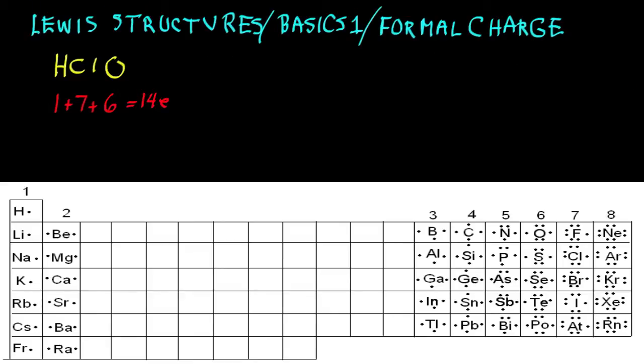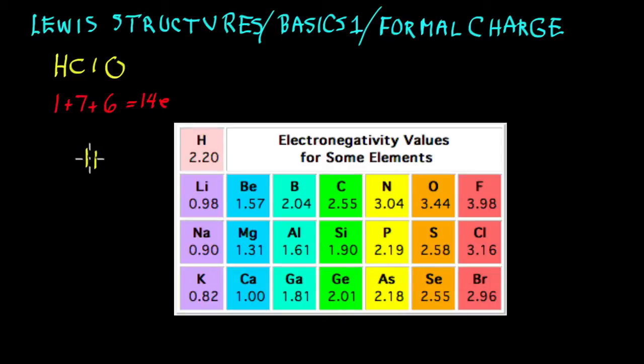The next rule is to assign the least electronegative element as the central atom. Right away we're going to have a problem here. The electronegativities: hydrogen would be least electronegative, then you could put chlorine on either side of it, and oxygen on the other.